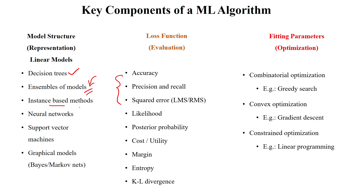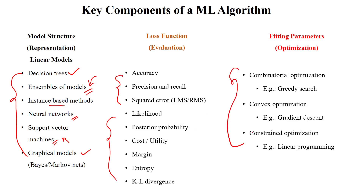Instance-based methods are also available — for example, K-nearest neighbors. Neural networks are already seen in the learning system example, and support vector machines are useful for classifying data. Graphical models like Bayesian methods and Markov models are also used. Based on these different structures, we can use different loss functions to find the error, and to reduce that error we go for optimization methods such as greedy search, gradient descent, or linear programming — mostly gradient descent is used to optimize the machine learning model.